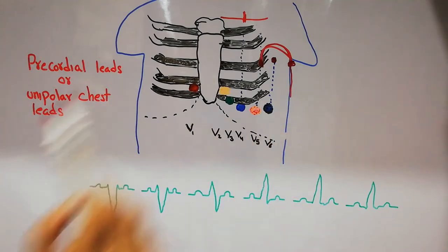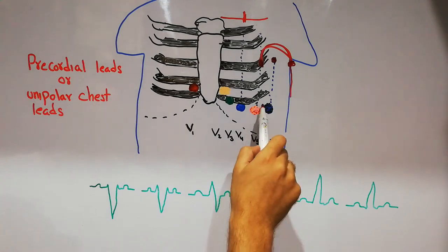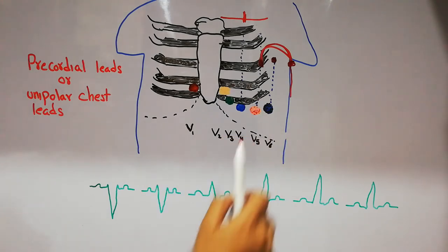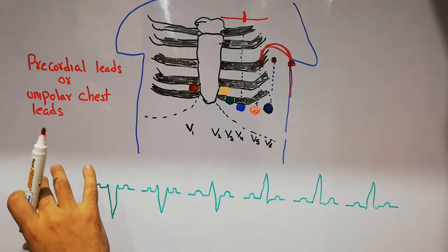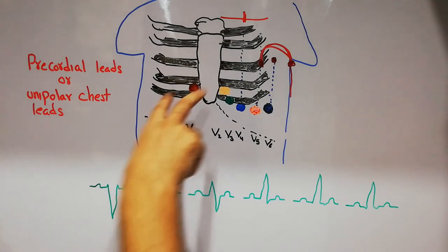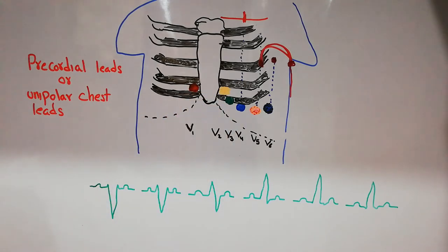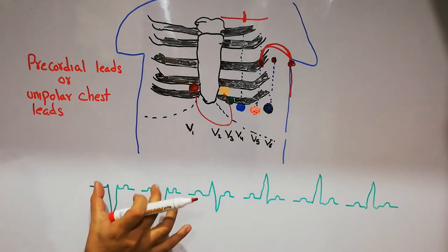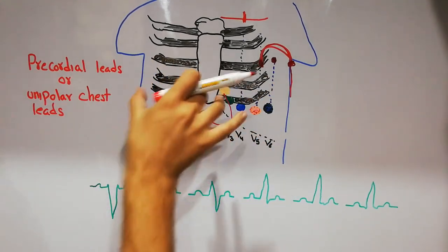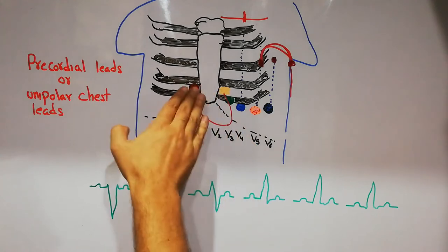The fifth lead, V5, is orange in color and is present in the fifth intercostal space on the anterior axillary line. The final, sixth chest lead, V6, is purple in color and is also present in the fifth intercostal space, but on the mid axillary line. The recordings from the first two chest leads, V1 and V2, come from just above the cavity of the heart, and they show negative deflections.